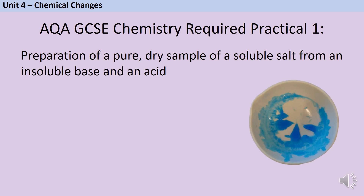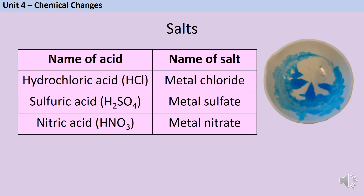But what is a salt and what is a base? Salts are compounds that are made when either a metal or a base reacts with an acid. They're ionic compounds and their name has two parts, like a first name and a surname. The first name comes from the name of the metal that was in the base. So if you make a salt out of copper oxide, then the first name of the salt will be copper.